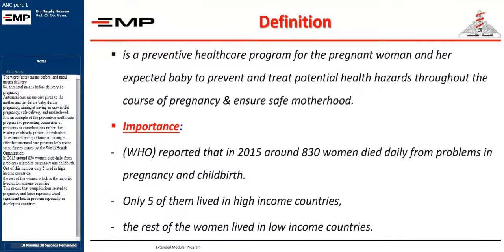The word 'ante' means before and 'natal' means delivery. So, antenatal means before delivery, i.e. pregnancy. Antenatal care means care given to the mother and her future baby during pregnancy, aiming at having an uneventful pregnancy, safe delivery, and motherhood. It is an example of the preventive health care program, i.e. preventing occurrence of problems or complications rather than treating an already present complication.